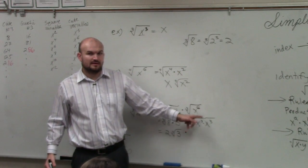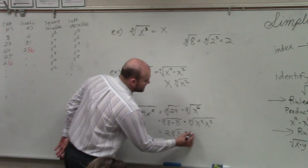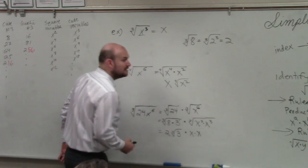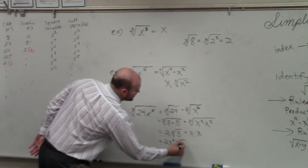x cubed is x. And the cube root of x cubed is x. So it would be x times x. So my final answer is 2x squared times the cube root of 3.